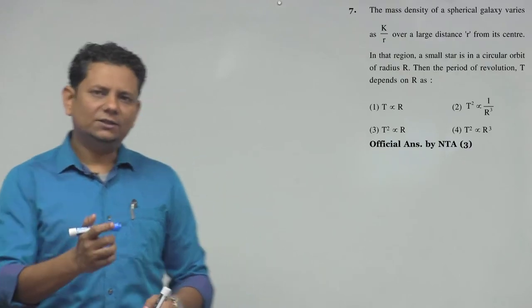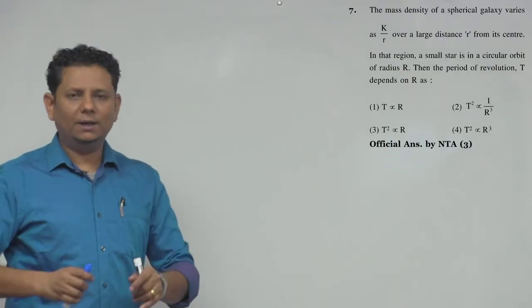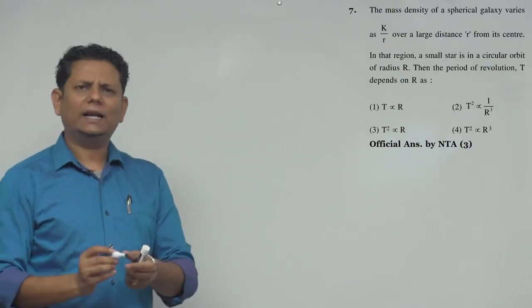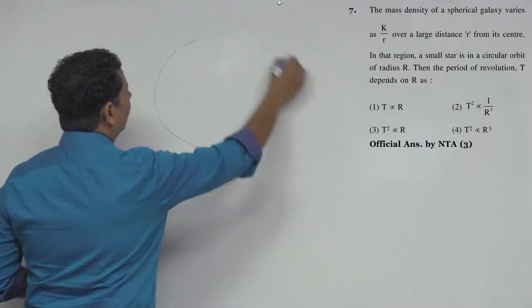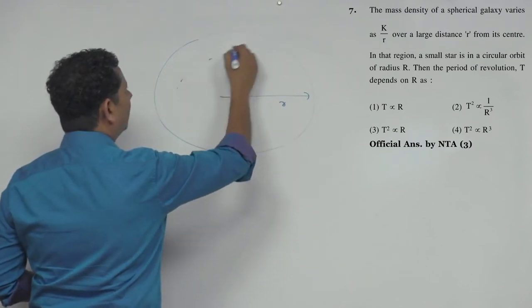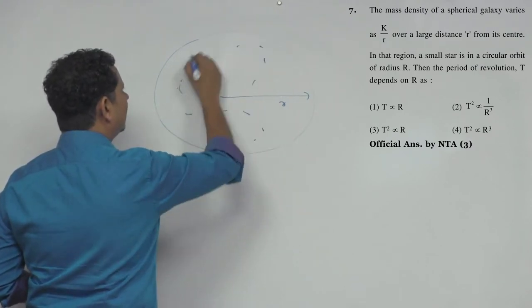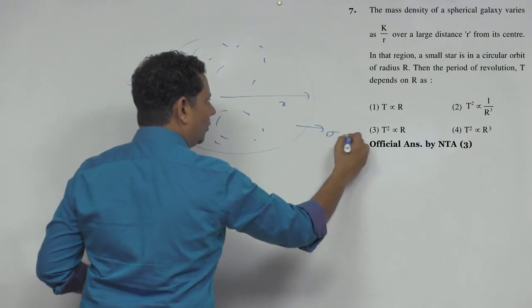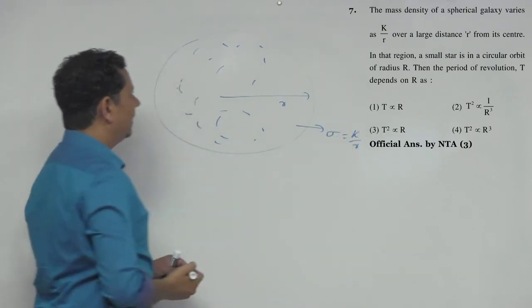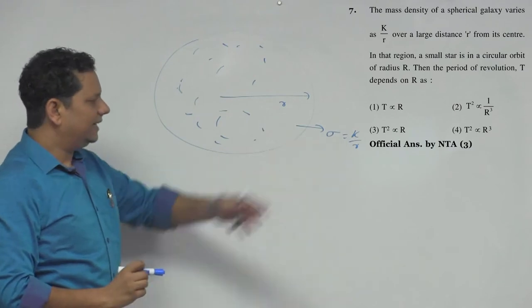The question may sound difficult at first but it's not. The scenario is: we have a galaxy with radius R, and there are many stars. The galaxy density ρ is given as k by r, which varies from the center.